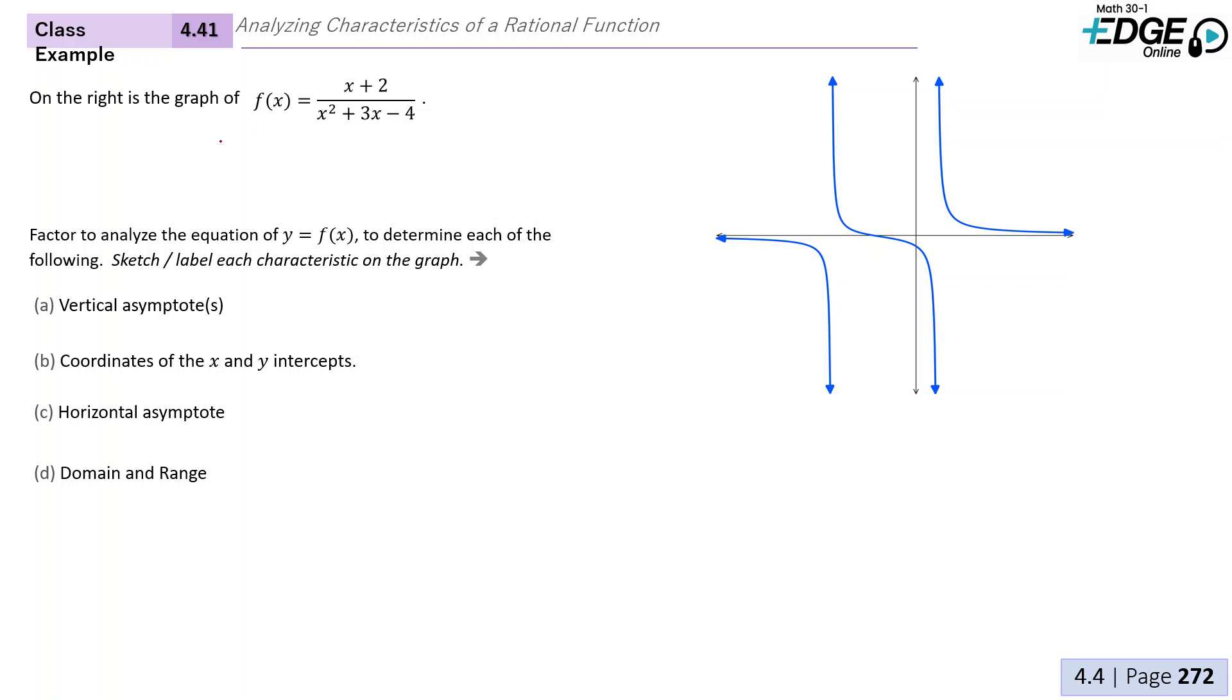So let's factor this first. We can write this as f(x) = (x+2)/[(x+4)(x-1)].